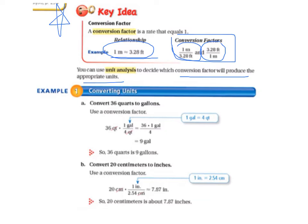Converting units, Example 1, Letter A. Convert 36 quarts to gallons. So we're going from quarts, which is a smaller unit, to gallons, which is a bigger unit.